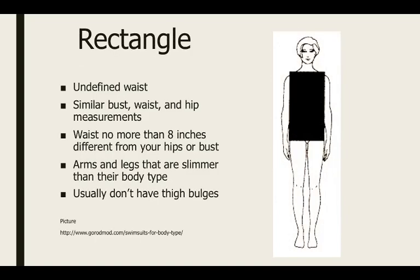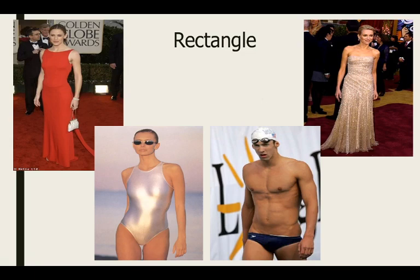So, our first shape is a rectangle. A rectangular shape has an undefined waist. They have a similar bust waist and hip measurement. If you're a man, it's going to be chest instead of bust. Your waist is never going to be more than 8 inches different from your hips and your bust. Your arms and legs are going to be slimmer than the rest of your body, and usually, you don't have any thigh bulges. You're going to have a very box-like shape. You can really see it in men. Men typically have rectangle. Right here, you can see there's really, it's just like a box. But there are women who have a rectangle shape as well.